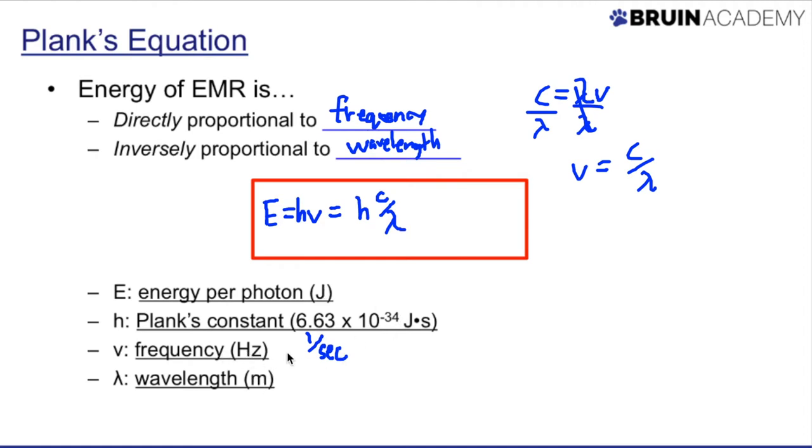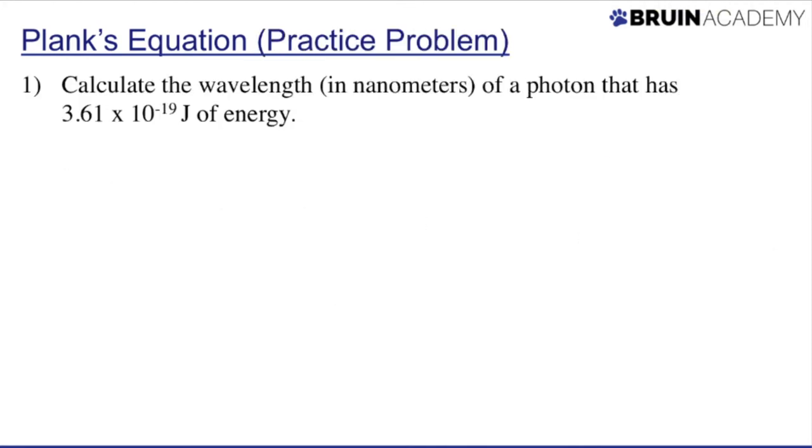If they don't give you the right units, like if they give you the wavelength in nanometers, you have to convert to meters. You always have to have these standard units. If they give you energy in electron volts, convert to joules. All right. So using this equation, let's go ahead and try a question.